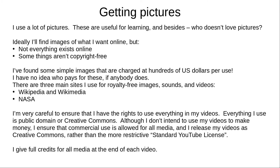I use a lot of pictures — they're useful for learning, and who doesn't love pictures? Ideally I'll find what I need online, but not everything already exists, and some of what does isn't royalty-free. I've found some really basic images that cost hundreds of US dollars per non-profit use. There are three main websites I use for royalty-free images, sound and videos: Wikipedia, Wikimedia, and NASA. I'm very careful to ensure I have the rights to use everything in my videos, so everything I use is either Public Domain or Creative Commons, which generally allows any use as long as you credit the original author. I don't intend to make money from my videos, but I ensure that commercial use is allowed for all media, and I release my videos as Creative Commons rather than the more restrictive standard YouTube license. I give full credit for all media at the end of each video, even where I don't strictly have to.